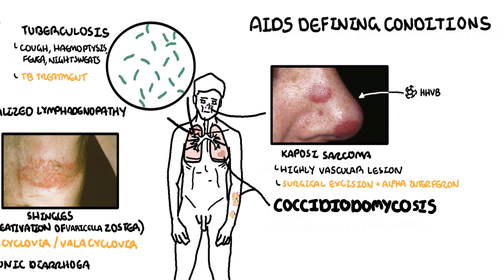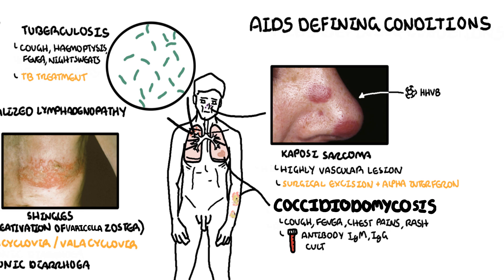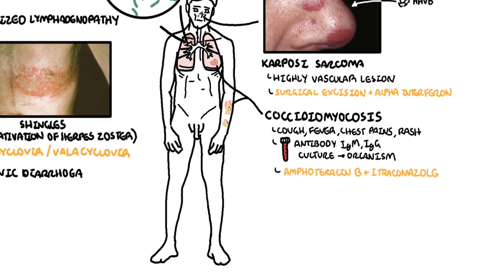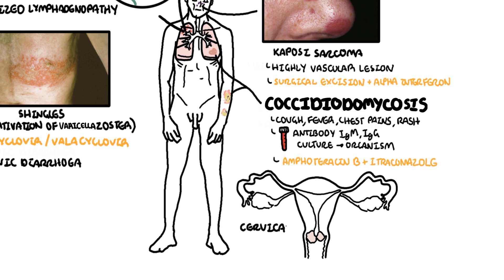Coccidioidomycosis presents with a fever, cough, chest pains, and possibly a rash. Investigations include serology positive for IgM and IgG against coccidioidomycosis, or positive growth on cultures, although this takes time. Treatment includes Amphotericin B and Itraconazole. Another AIDS defining condition includes cervical cancer.